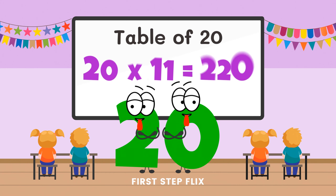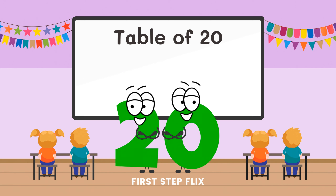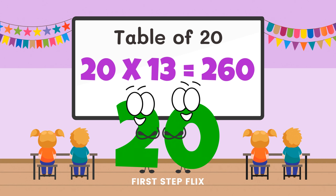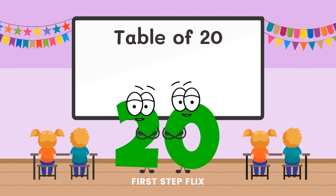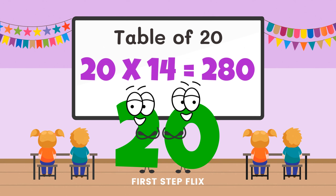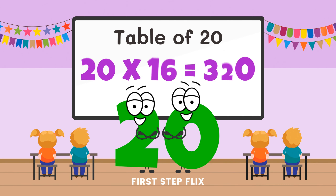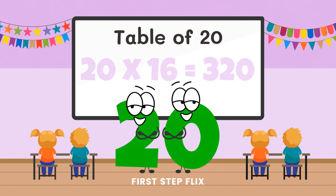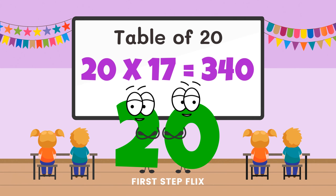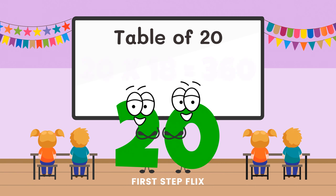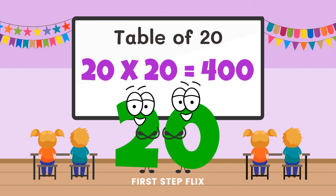20 elevens are 220. 20 twelves are 240. 20 thirteens are 260. 20 fourteens are 280. 20 fifteens are 300. 20 sixteens are 320. 20 seventeens are 340. 20 eighteens are 360. 20 nineteens are 380. 20 twenties are 400. Let's repeat one more time.